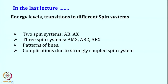In the last class we discussed energy levels and transitions in various spin systems. Using quantum mechanical formalism we derived different energy levels and transition probabilities for two-spin systems — both strongly coupled (AB) and weakly coupled (AX) — and looked at how intensity varies for each case.